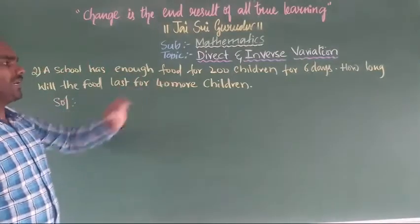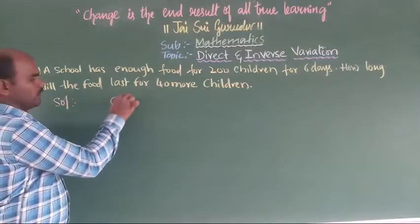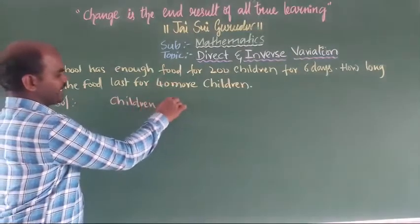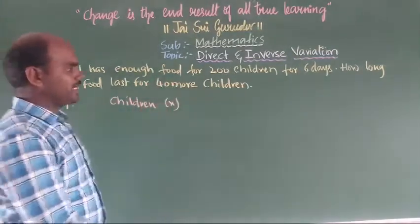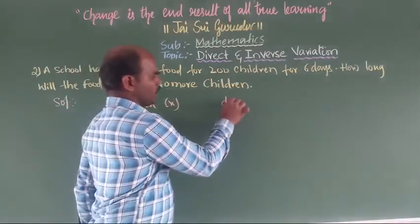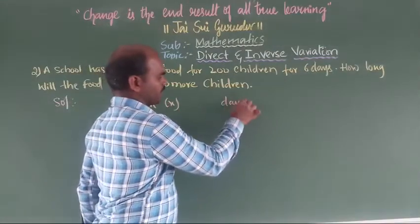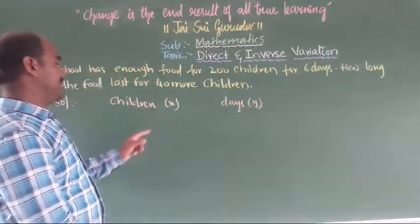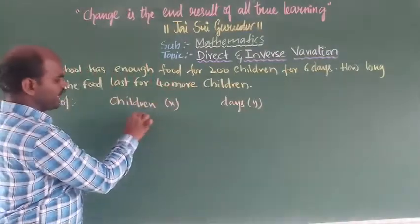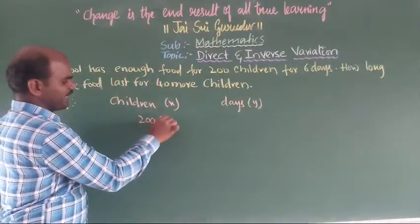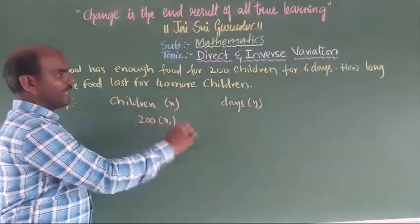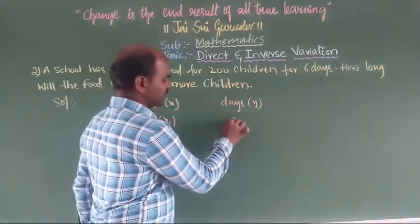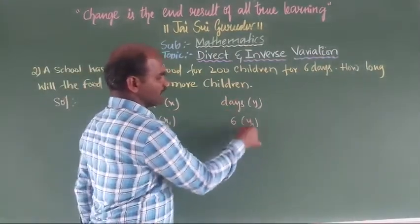I am taking the number of children and the days. Children: x1 is 200. Days: y1 is 6 days.